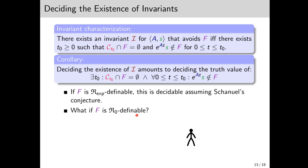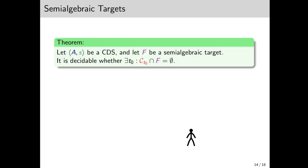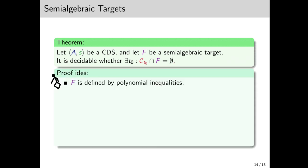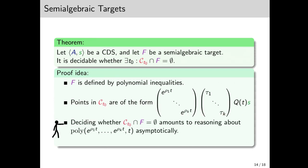Okay, well, what about when F is semi-algebraic? Then it's not really fair to rely on Chaniel, since R0 is decidable unconditionally. It turns out that in this case, it is decidable unconditionally whether there exists T0 such that CT0 is disjoined from F. The idea is that F is defined by polynomial inequalities, and points on CT0 have this specific structure. So when we plug these points in the description of F, we ultimately need to reason about the asymptotics of polyexponential expressions.